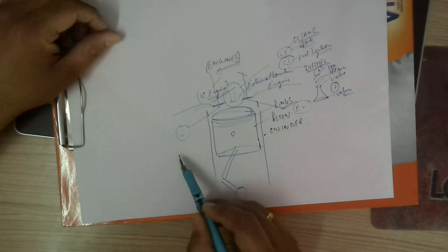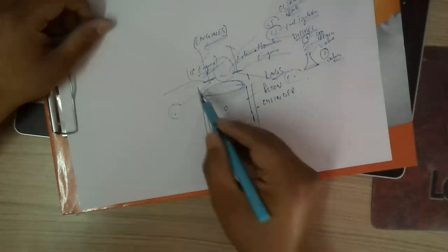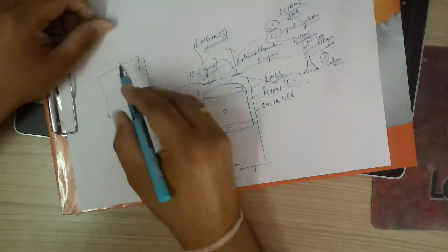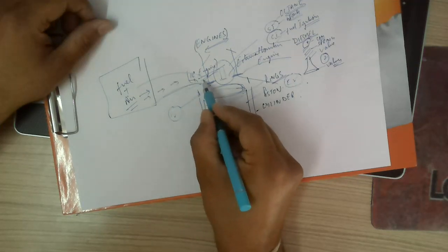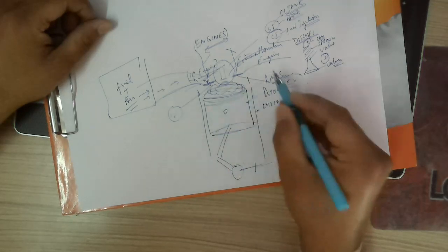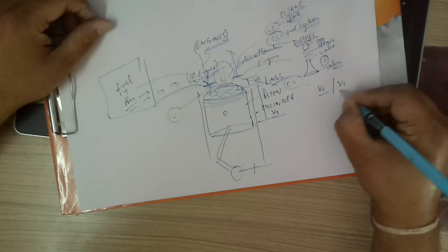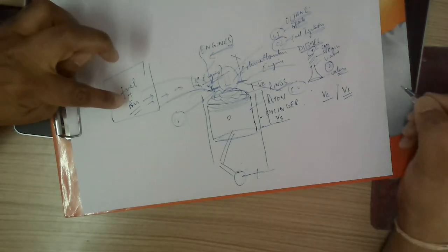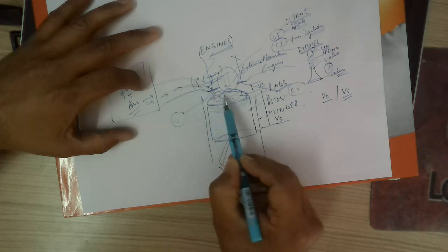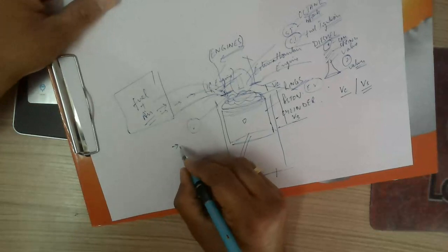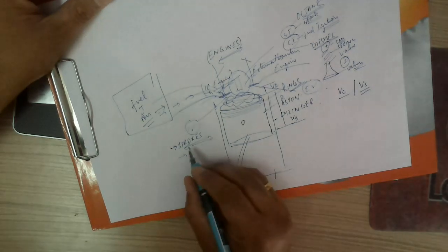The inlet valve and exhaust valve operate depending upon the crankshaft position. The charge — which is the mixture of fuel plus air — enters the combustion chamber and accumulates in the clearance volume. The remaining space is the swept volume. The combustible mixture enters from one side and accumulates, after which different strokes are generated.